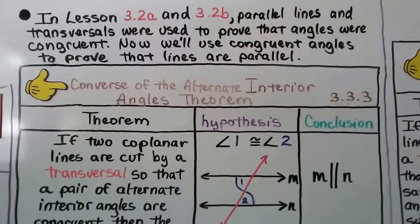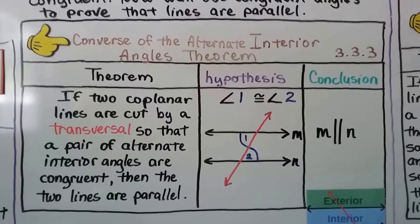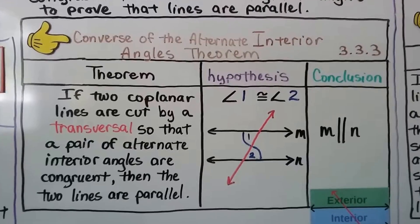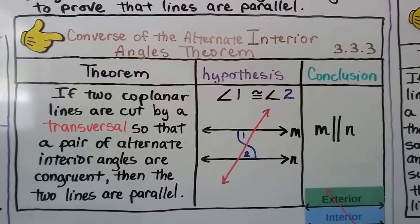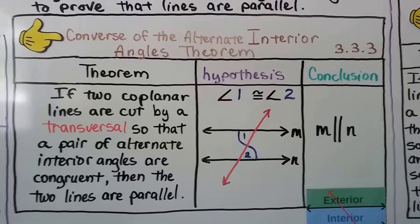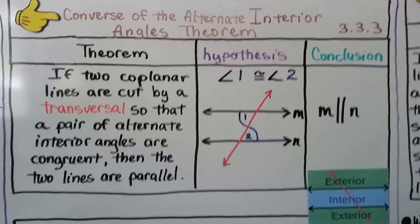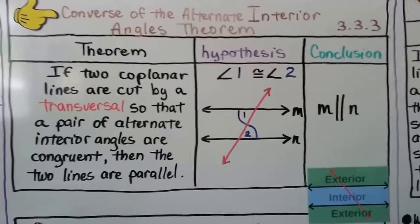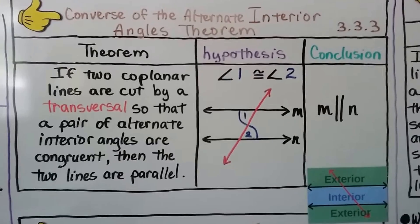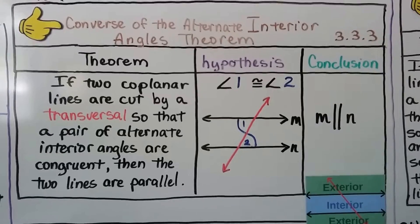Here's the converse of the alternate interior angles theorem. The theorem says if two coplanar lines are cut by a transversal so that a pair of alternate interior angles are congruent, then the two lines are parallel. We can see angle 1 and angle 2 — they're in the interior of the two parallel lines and on opposite sides of the transversal. Because they're congruent, our conclusion is that m is parallel to n.